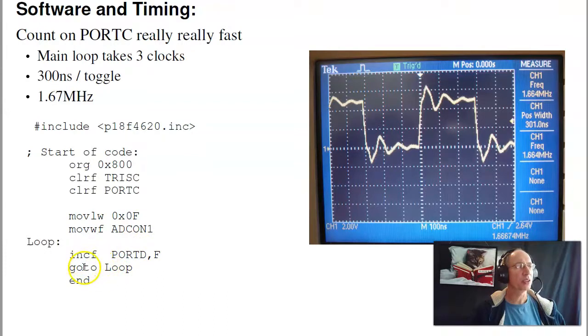This actually takes 3 clocks to go through. It's 2 instructions, plus 1 for go to, 3 clocks. Each clock's 100 nanoseconds. And if you look at port D, pin 0 on the oscilloscope, this is what you'll see. It's 3 divisions at 100 nanoseconds per division. 300 nanoseconds are 3 clocks high, 3 clocks low.